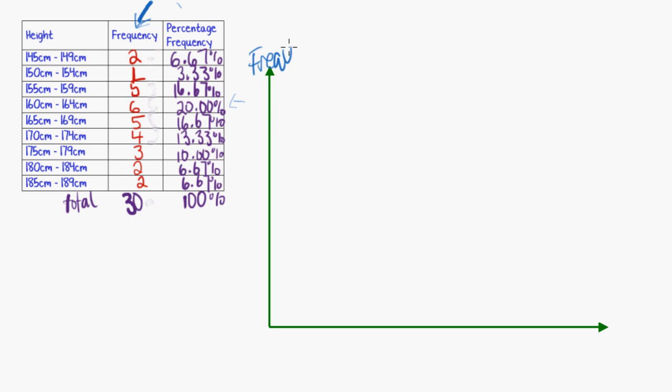So that's what I would put along here, frequency, on my vertical axis. And on the horizontal axis, we would put the variable that we're graphing. So in this case, it's height. Now for my vertical scale, the lowest is 1 and the highest is about 6. So I'm going to go from 0 to about 7 or 8 along the vertical axis.